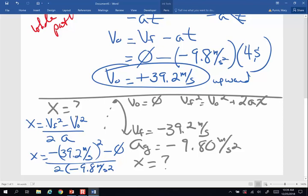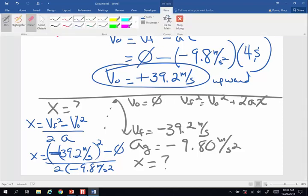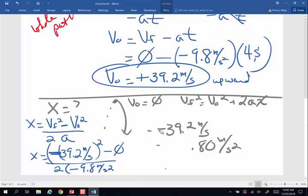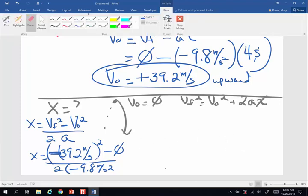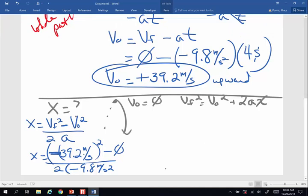Now, in this case, this negative sign is actually attached to the 39.2. It's not part of the equation. So that negative sign is within that square. And I am going to erase to give myself just a little wiggle room here. And then we will complete this problem. So, 39.2 squared divided by a negative 9.8 times 2, I am going to end up with an answer that is negative 78.4 meters.